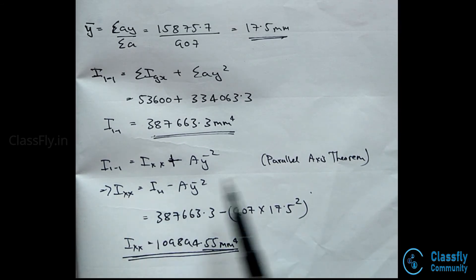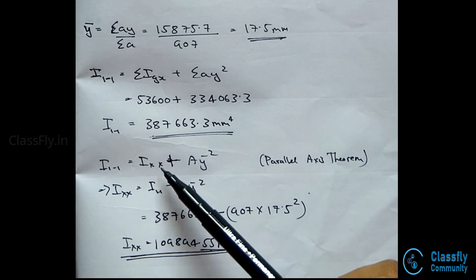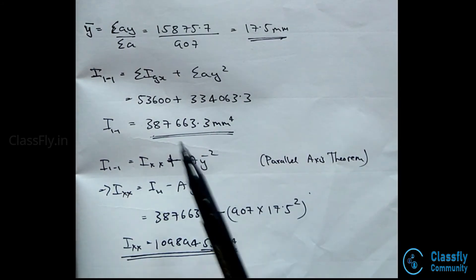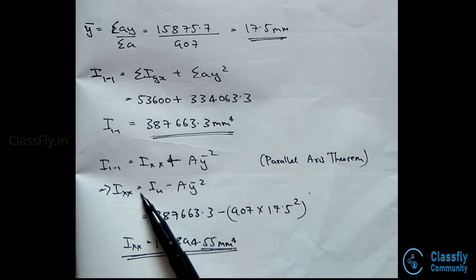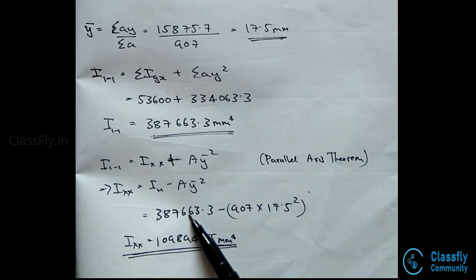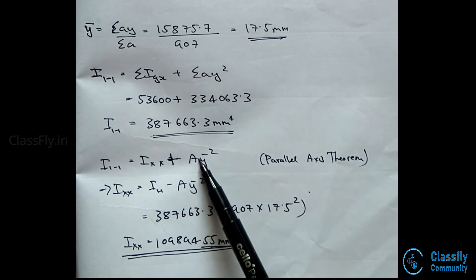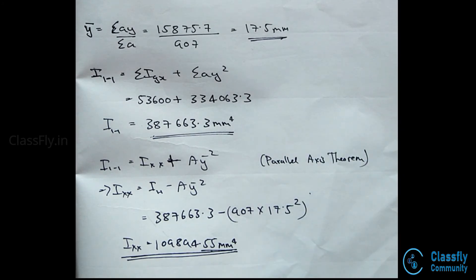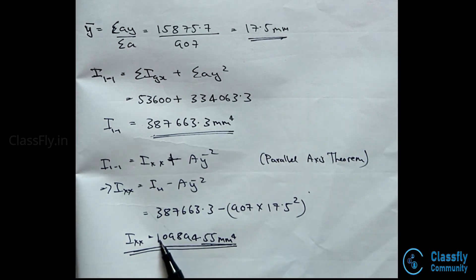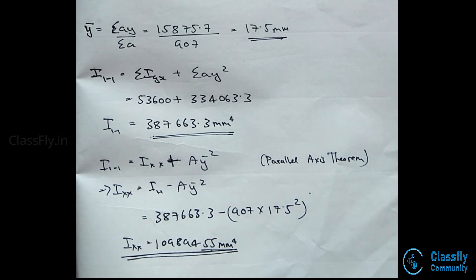From the parallel axis theorem, I₁₁ = Ixx + A·y-bar², so Ixx = I₁₁ − A·y-bar², that is 387663.3 − 907×17.5². From this we get the moment of inertia about the horizontal axis, Ixx = 109894.55 mm⁴.